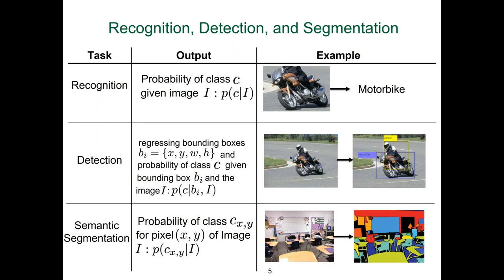These are the three most common problems in computer vision. The first is recognition: given an image, tell me what is in the image by assigning a single label — the classification problem. In probabilistic notation, given the measurements, which is the image, determine what class you are looking at. For the first example, we would label this image as a motorbike — with some probability, given some representation of the image, predict that we are seeing a motorbike.